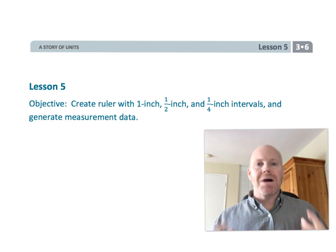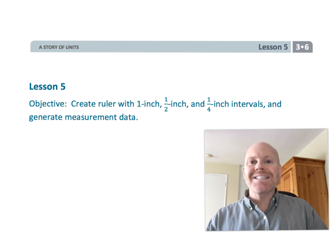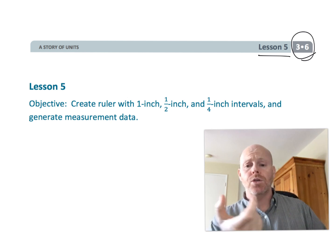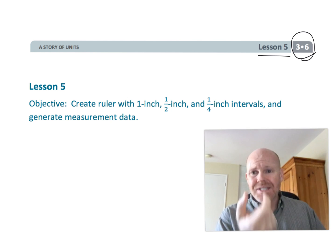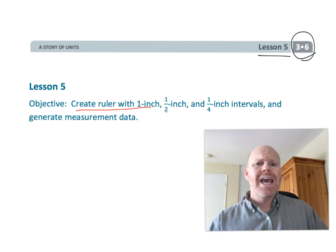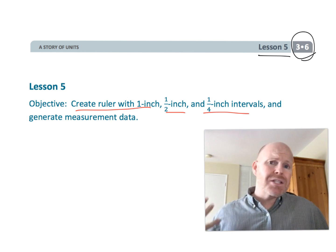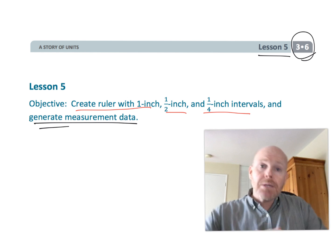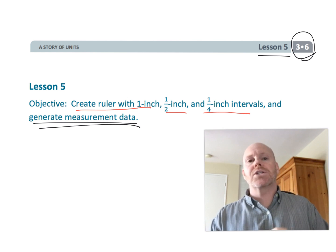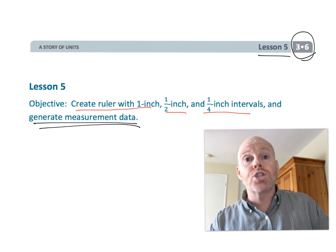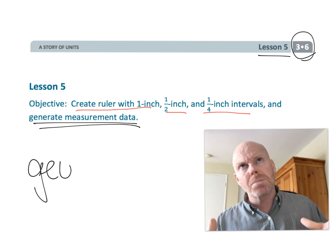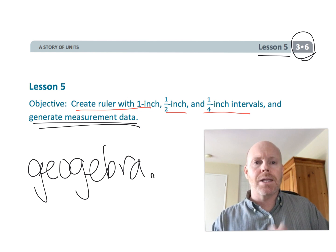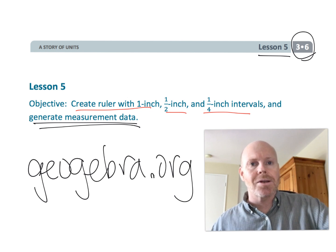This is third grade module six lesson five. In this lesson, students are going to be creating their own ruler using intervals of inches, half inches, and quarter inches, and then they're going to be measuring stuff and generating data. I'm also going to do a Dwayne Haabecker bonus by showing you a nice GeoGebra applet that I created using rulers. So let's get started.